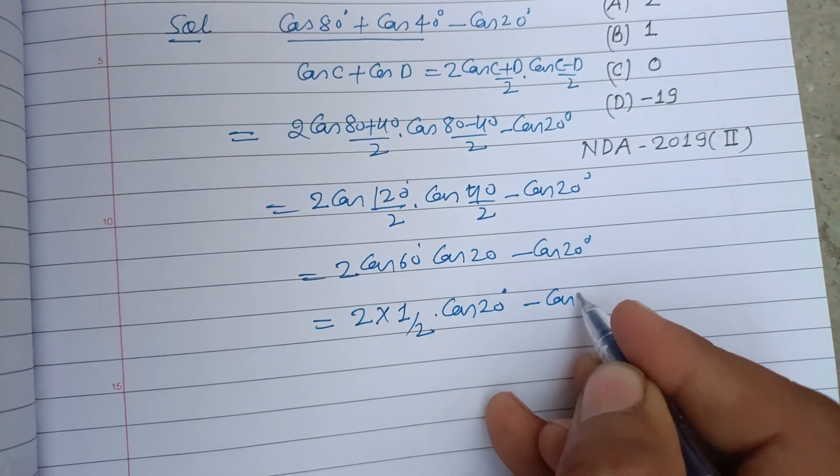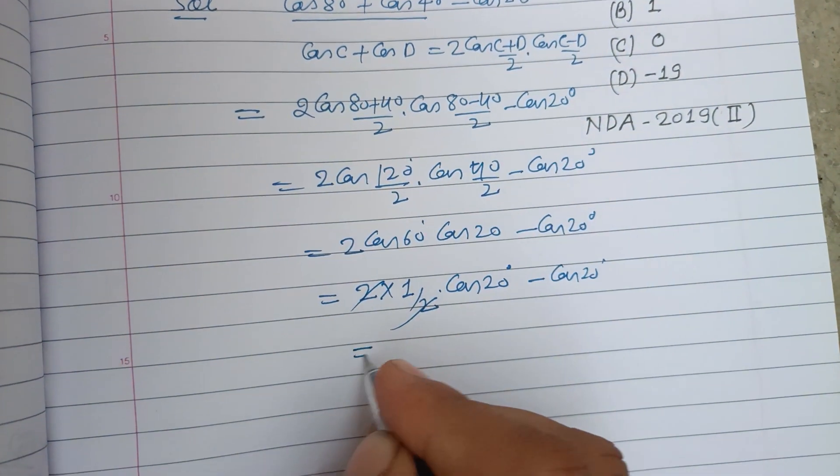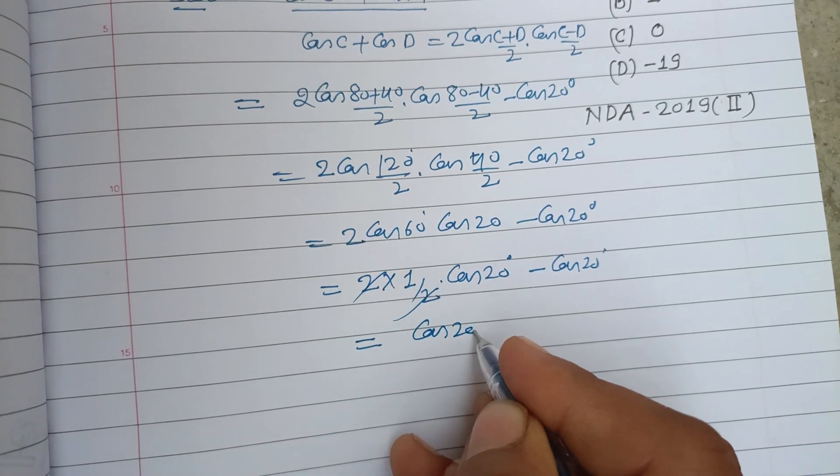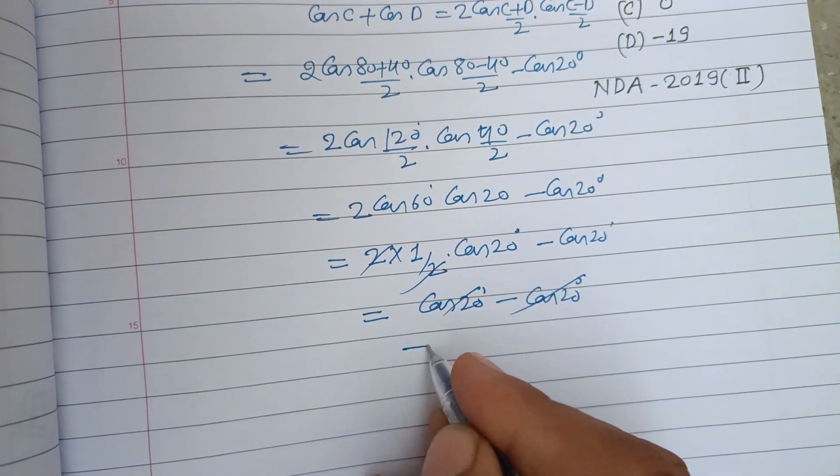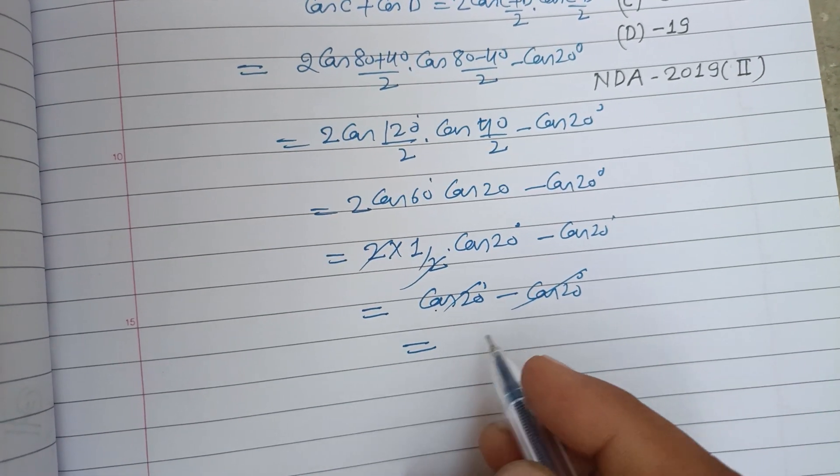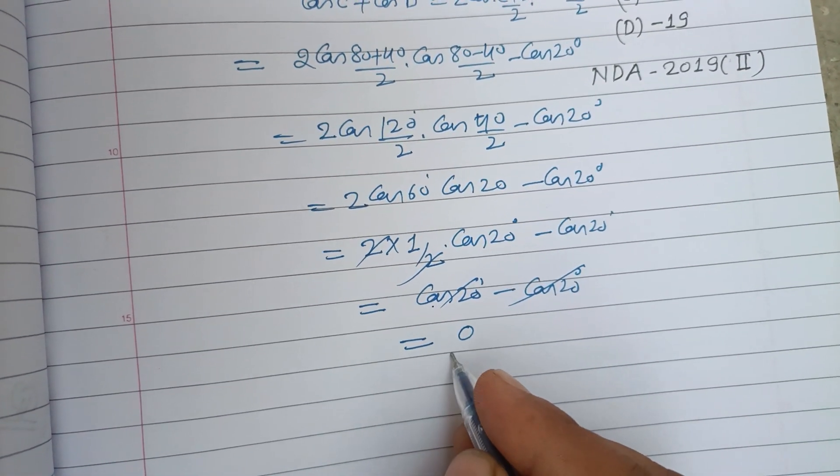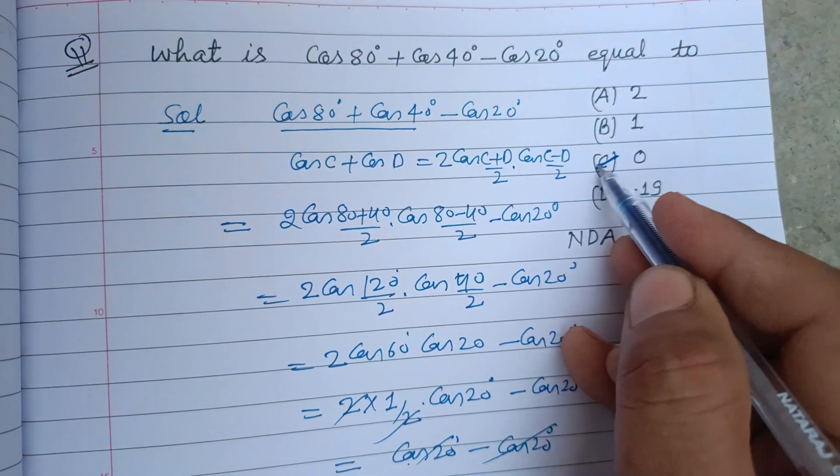This gives us cos 20° minus cos 20°, and these are negative and positive so they cancel. We got 0. Zero is the correct answer to this question, which is found in option C.